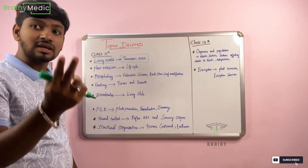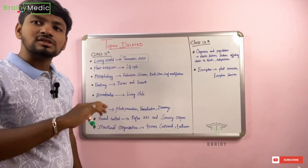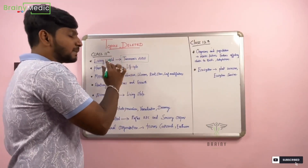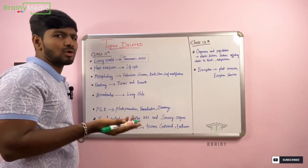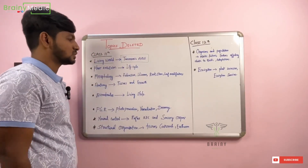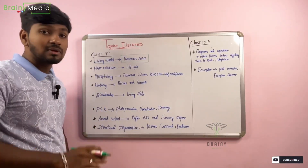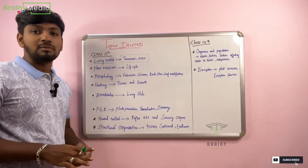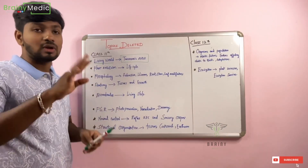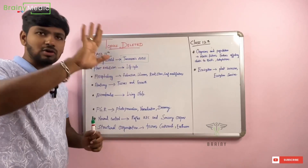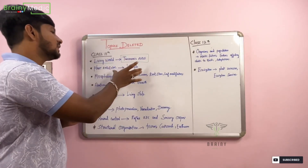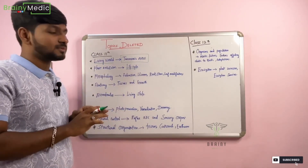The last page of Living World is mostly the learning process. Next is the Plant Kingdom. In the Plant Kingdom, the last page covers Life Cycles — haplontic, diplontic, and many topics. The examples are very important, but the life cycle diagrams are the key part.